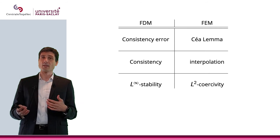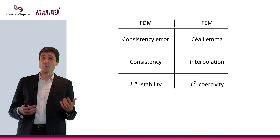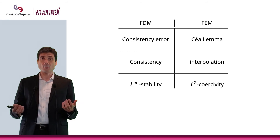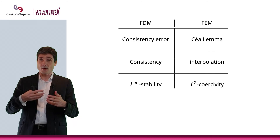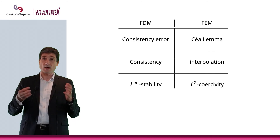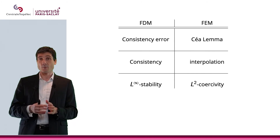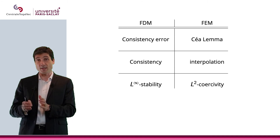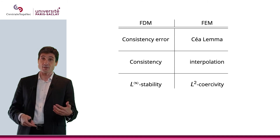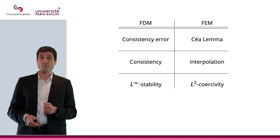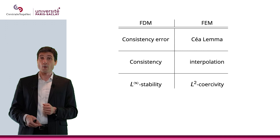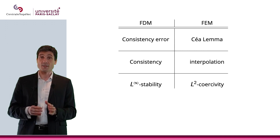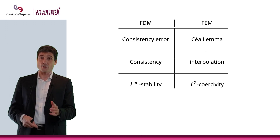In one case it's usually triangles, in the other case it's usually rectangles. Then you put together your method, and eventually what you obtain is Au equals b — in other words, a linear system. In the next chapter, we will see strategies to solve these linear systems efficiently.